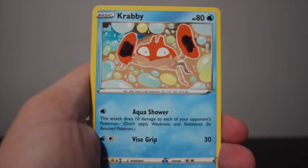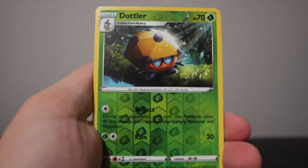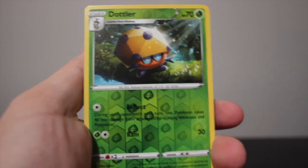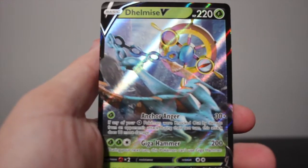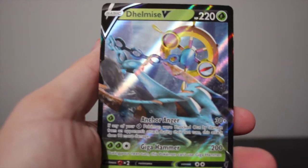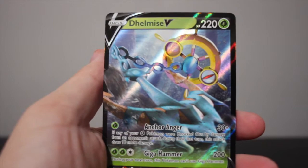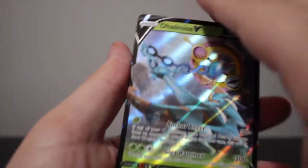Krabby, Koffing, Dottler, a Dottler reverse. Alrighty, we gotta Ditto V. So it's something, alright, it is something. We'll take it. Gives us something at least.